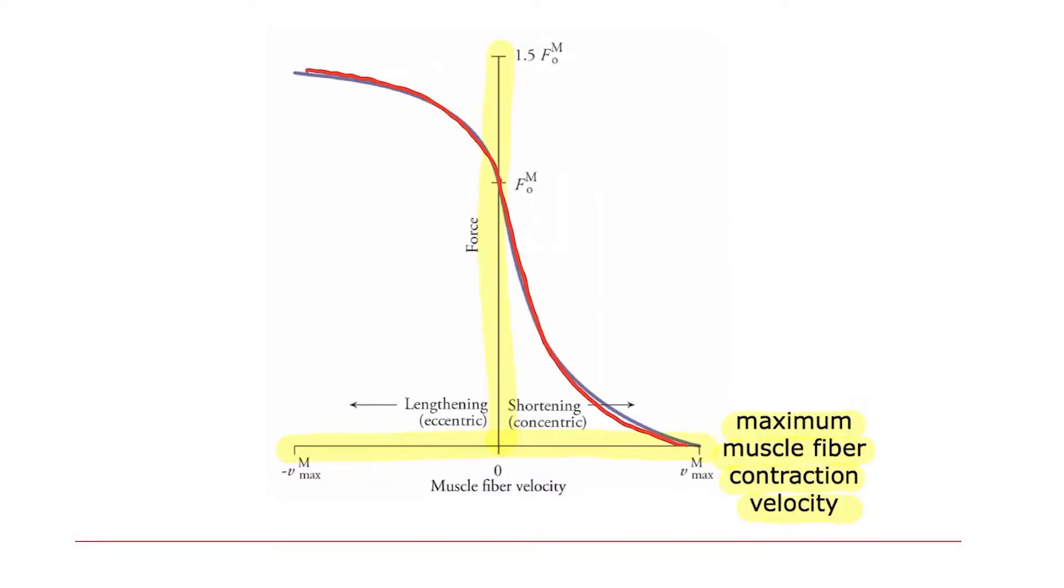Interestingly, when the muscle's lengthening, you can generate more force than when it's isometric. So when a muscle is isometric, it generates one force. When it's shortening, it generates less force, and even less force the faster it shortens, and then can generate more force at lengthening velocities.